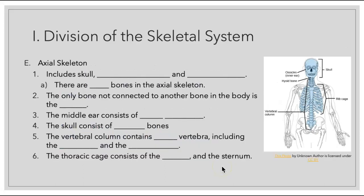What makes up our axial skeleton? It's going to include our skull as well as the vertebral column and our thoracic cage. We are going to have 80 bones within this axial skeleton. The rest would be in our appendicular skeleton, which we'll discuss in another chapter.